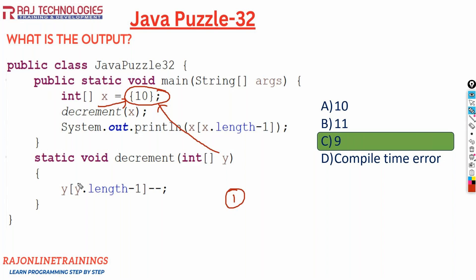So if you go with ordinary variables, it will become like a local variable and there will be separate memory for local variables. But in the case of arrays, since it is reference type, x and y will be referring to the same array, 10 only. That point we should remember for this puzzle. So the correct output is 9.